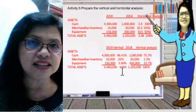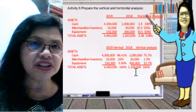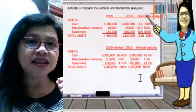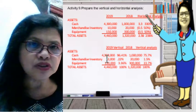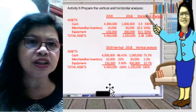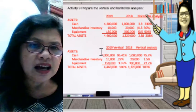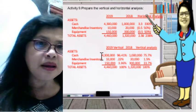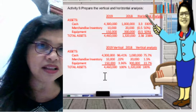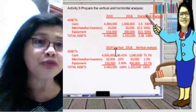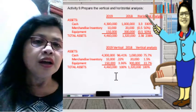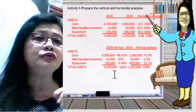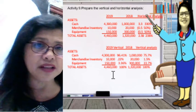Now let's go to the vertical analysis of the assets. To compute vertical analysis — which is a common size statement analysis — we compare one asset account to the total asset account. In this case, the cash account has 4,300,000, divided by total assets of 4,460,000, which gives 96.41%.